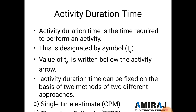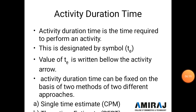Now, one of the most important points: activity duration or time. Activity duration is the time required to perform the activity. For example, excavation for a 3BHK bungalow foundation may require three or four days — that is the activity duration time. It is denoted by the symbol 'te', where 't' stands for activity time. The value of te is written below the activity arrow on the CPM diagram.